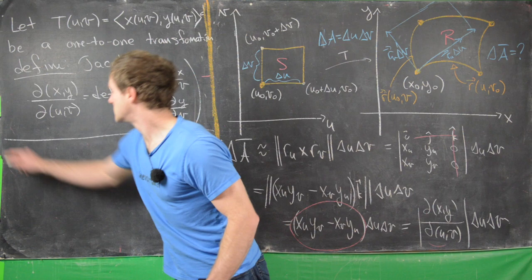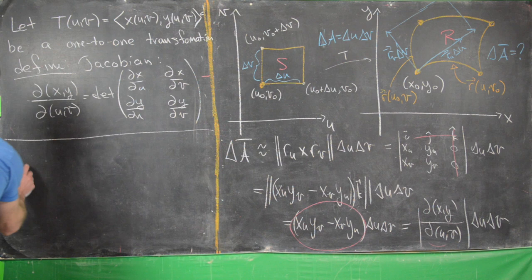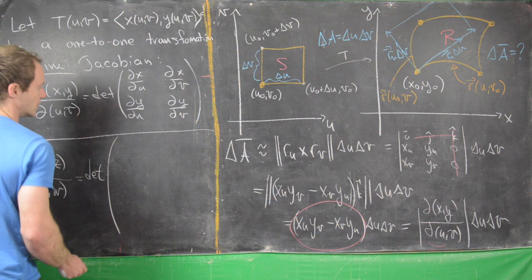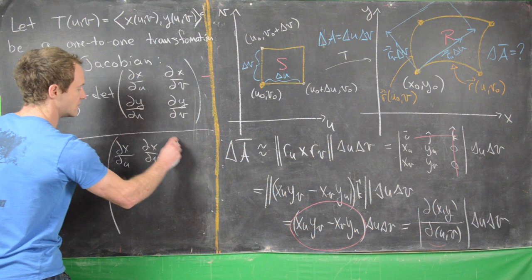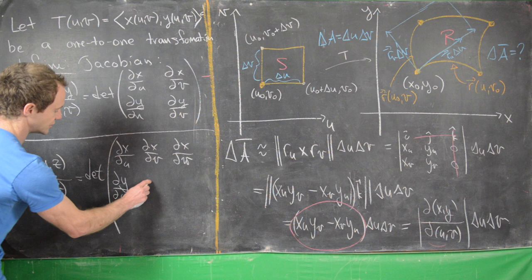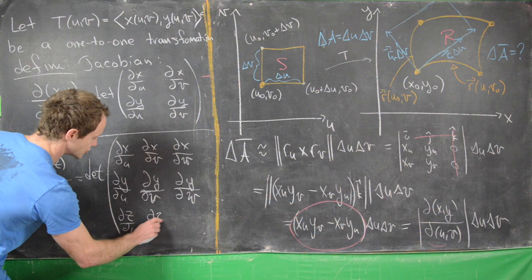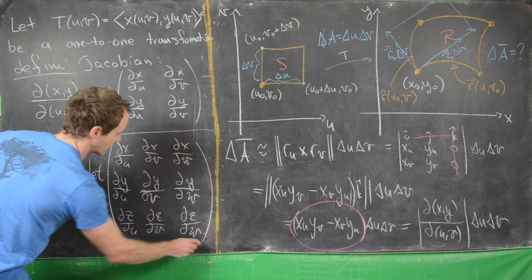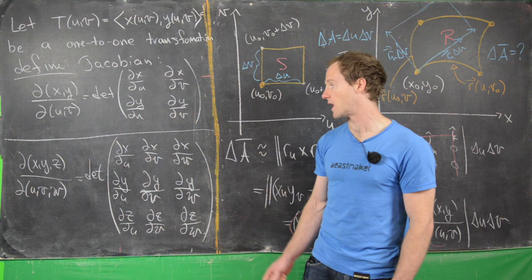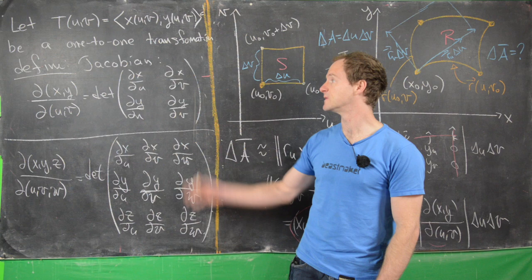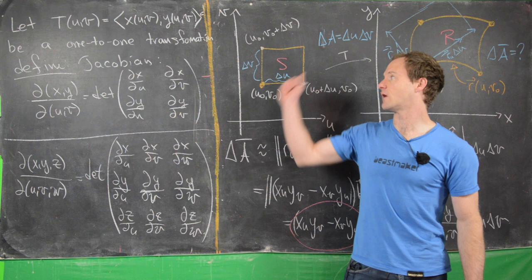We can similarly define a Jacobian for a three-variable transformation as ∂(x,y,z)/∂(u,v,w), which is the determinant of the 3×3 matrix with first row (∂x/∂u, ∂x/∂v, ∂x/∂w), second row (∂y/∂u, ∂y/∂v, ∂y/∂w), and third row (∂z/∂u, ∂z/∂v, ∂z/∂w). We won't derive this geometrically, but the idea is that we go from a rectangular box on one side to a parallelepiped on the other, using the formula for the volume of a parallelepiped.